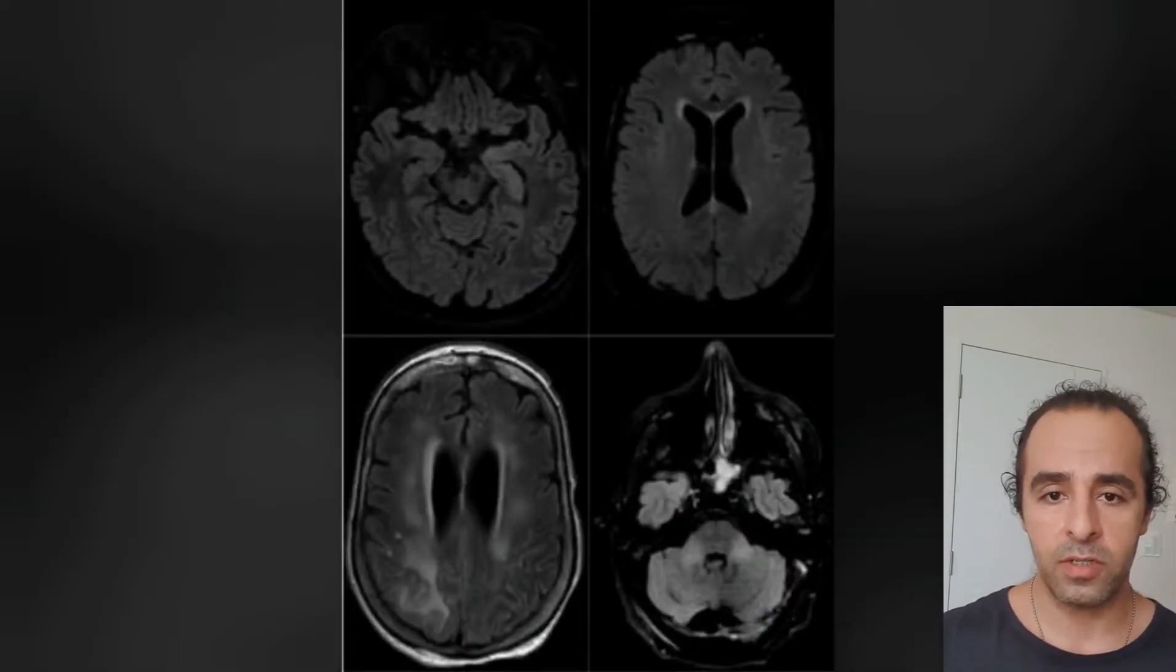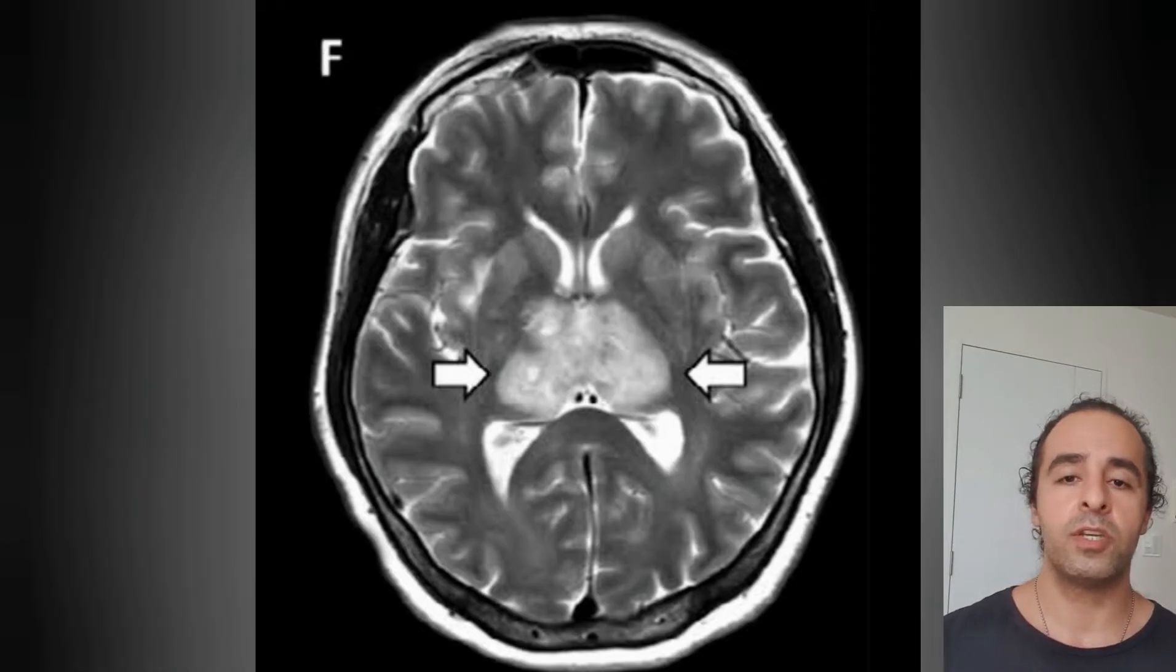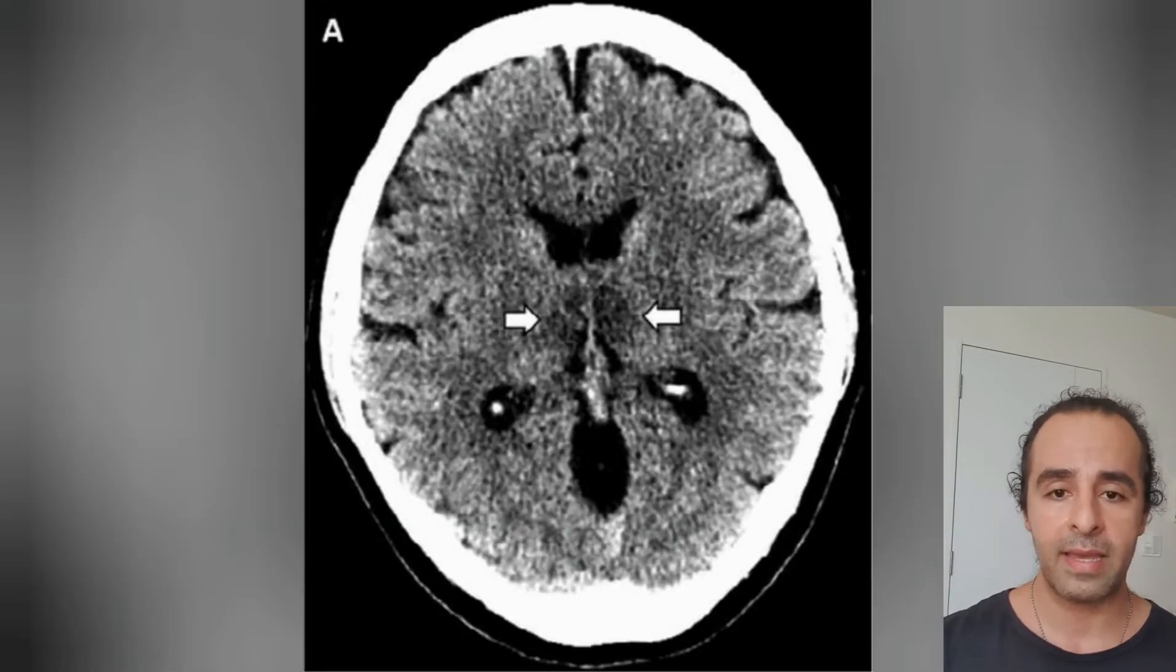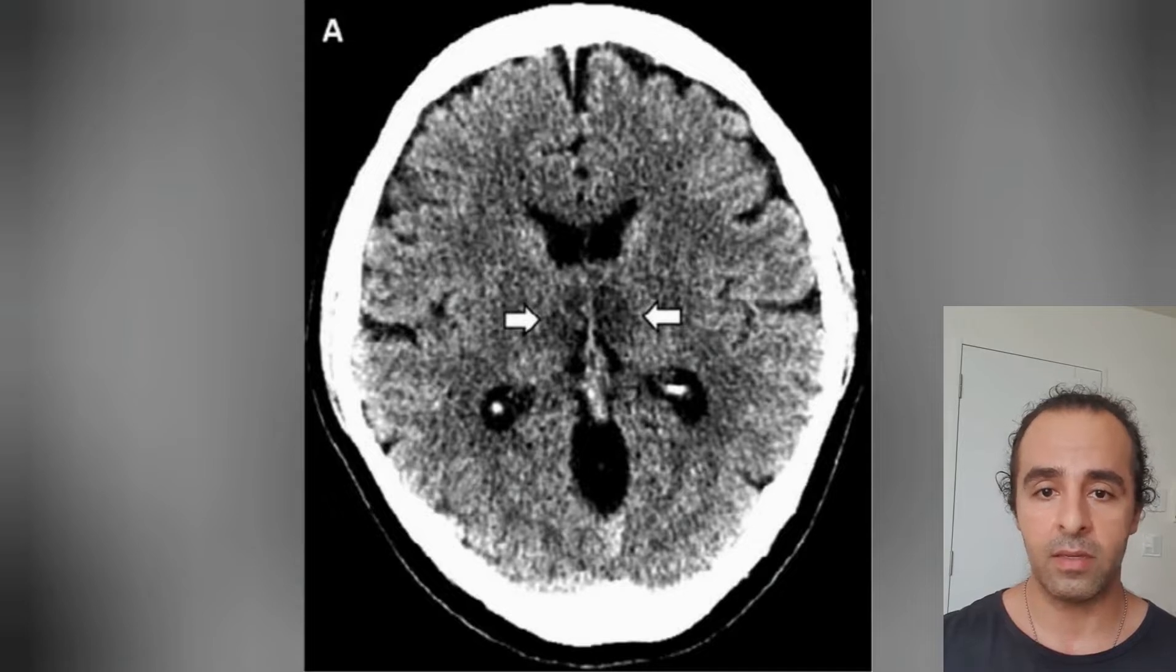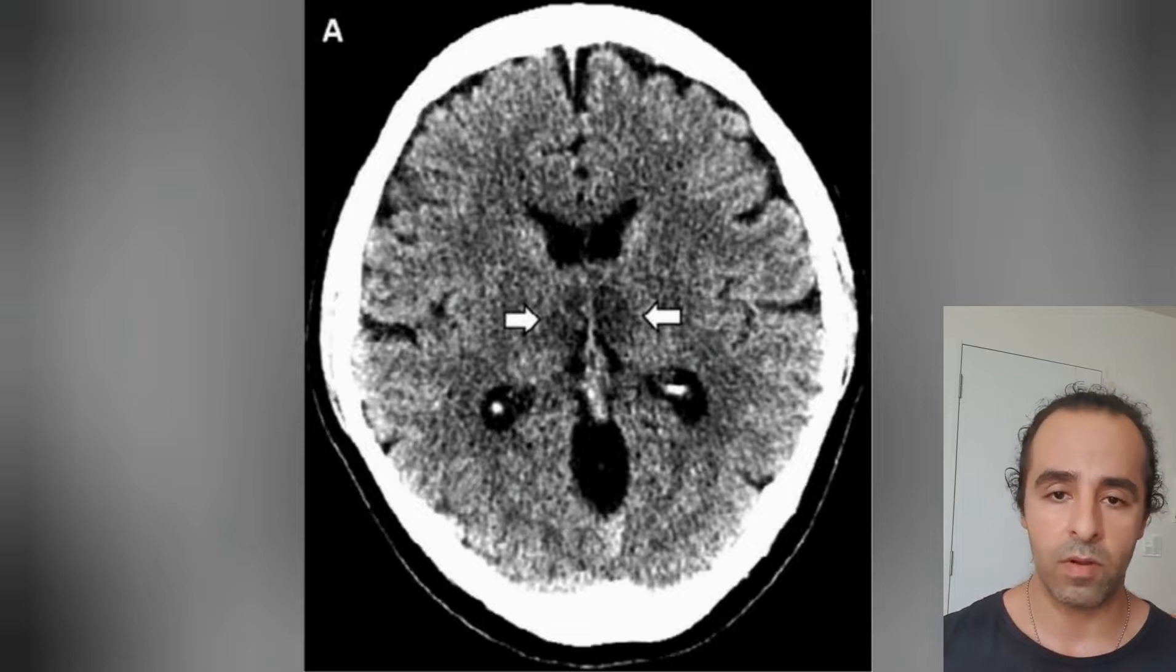As you can see in this picture, this is an MRI of a patient who got the coronavirus, and those black dots are the parts of his brain that have been damaged by the coronavirus.